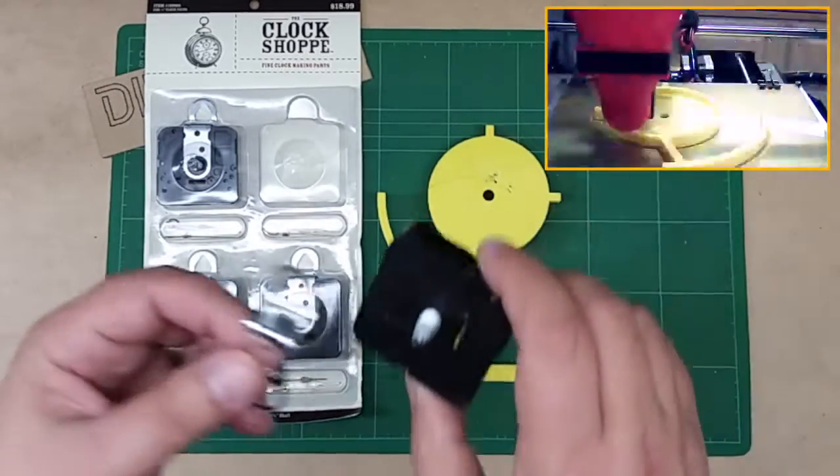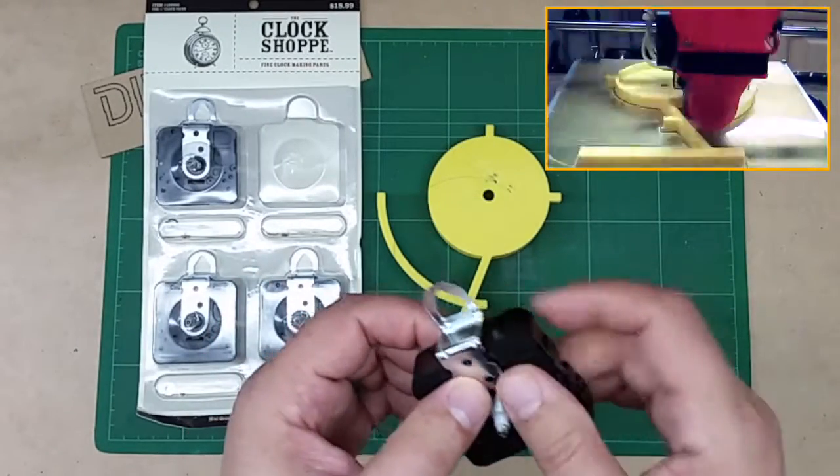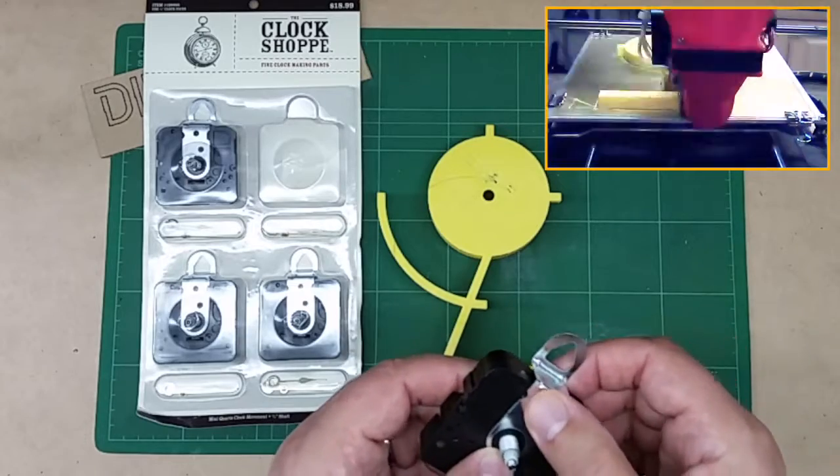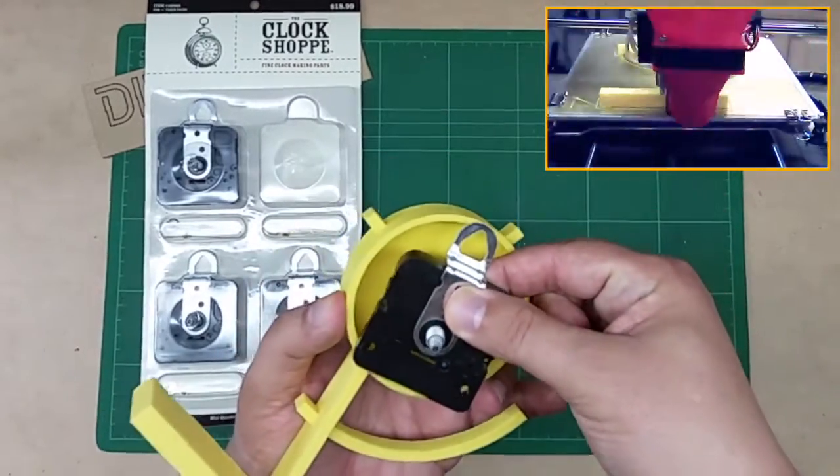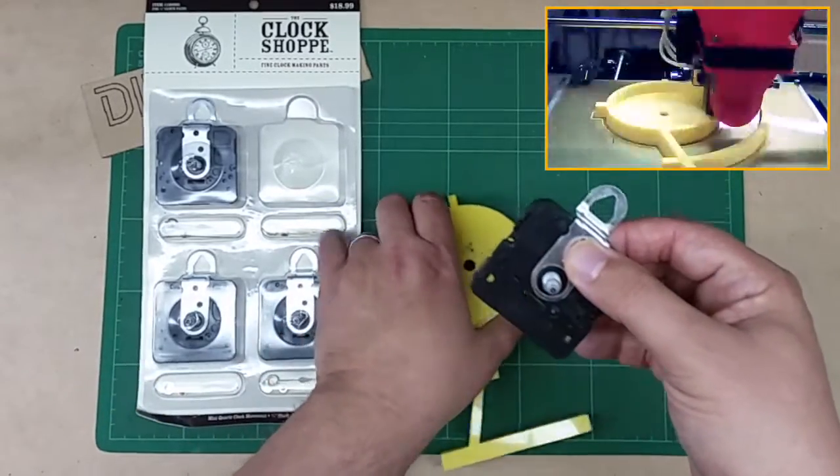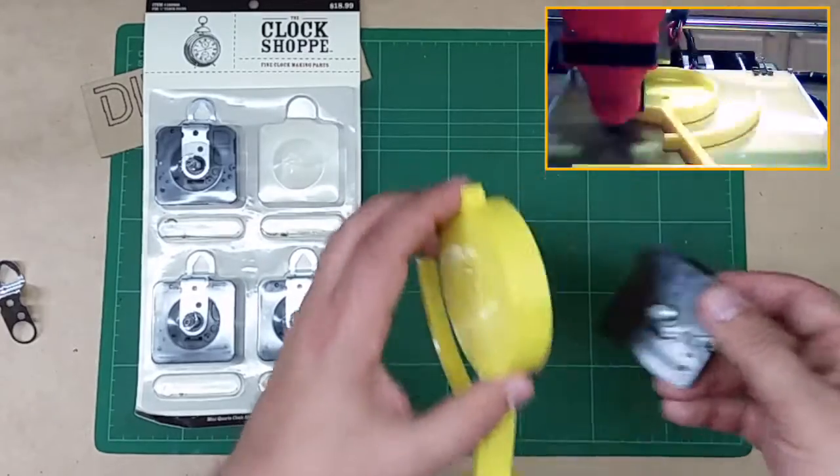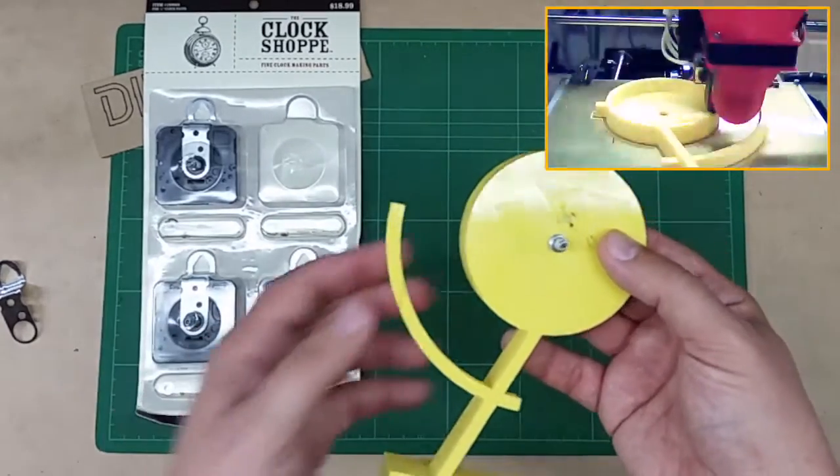One of the pieces I do want to point out is you want to get one where either it doesn't have this hanger piece or the hanger piece is removable. Because some of these have a hanger piece that is molded in there. And what happens is it'll hit the top of the body. So you want to get ones like these where this is removable.